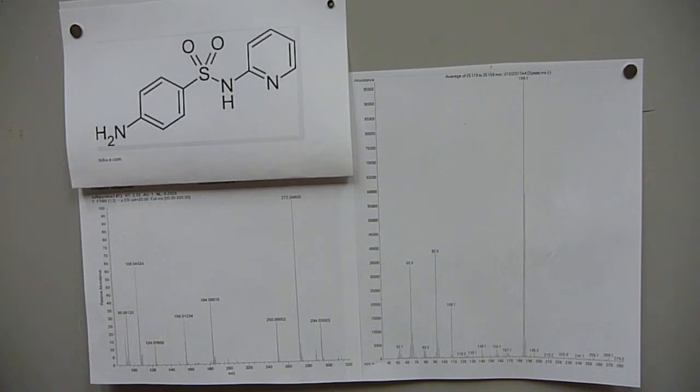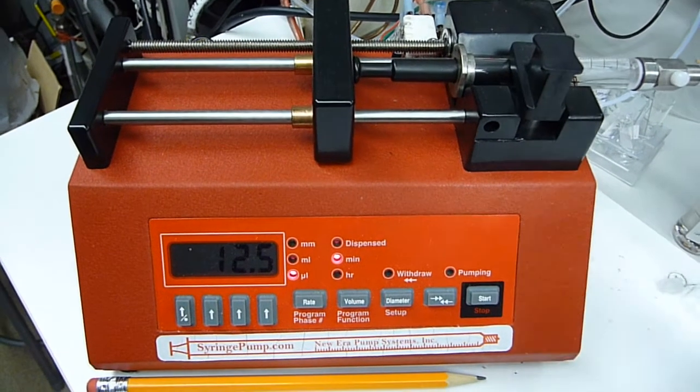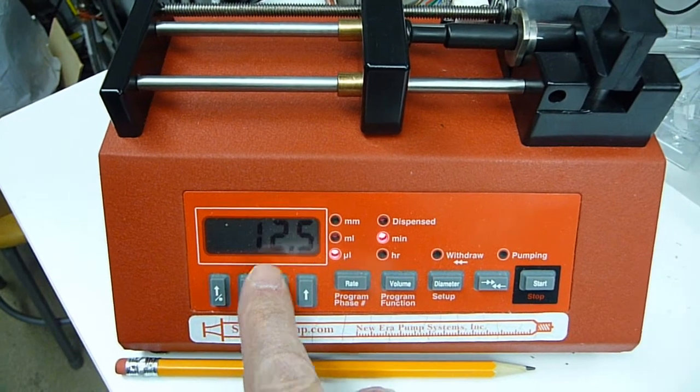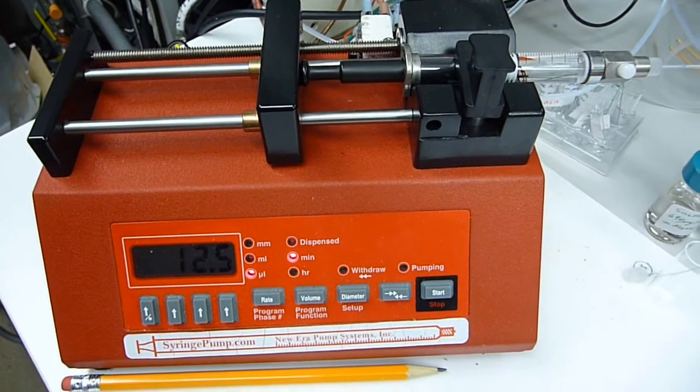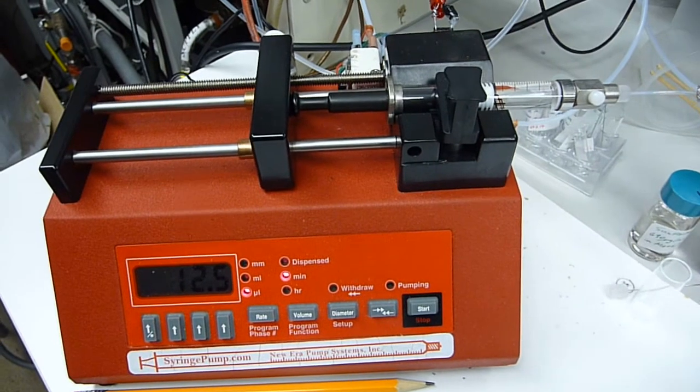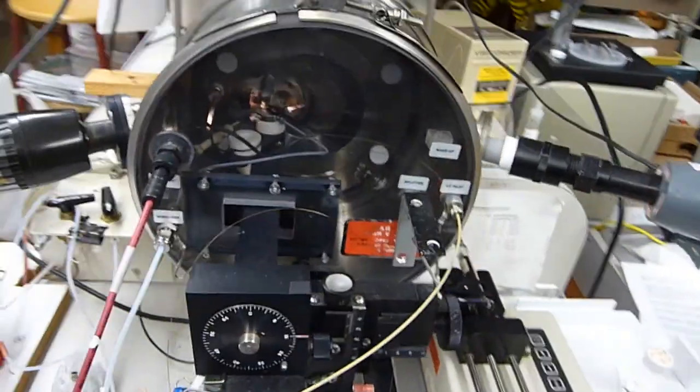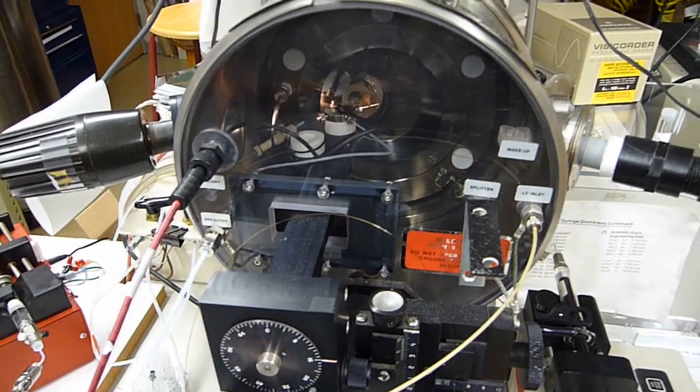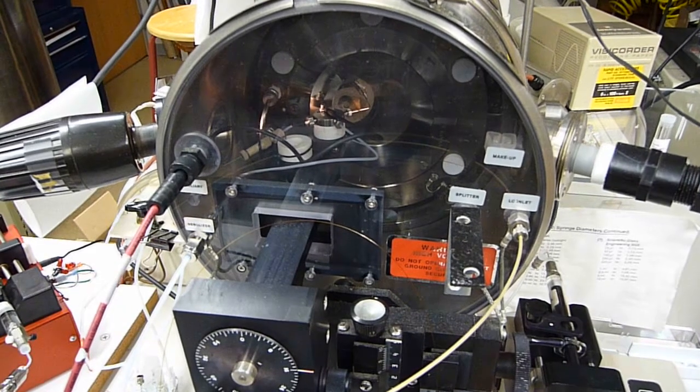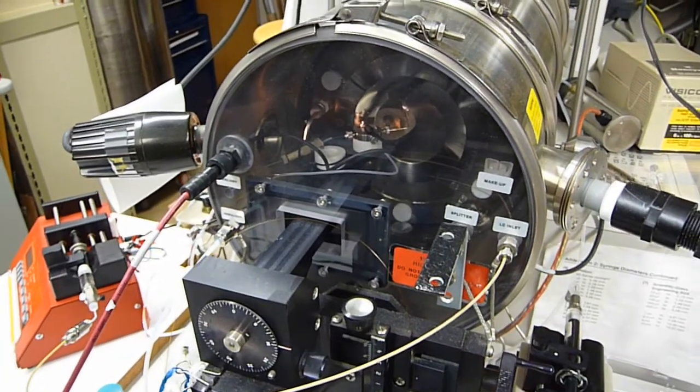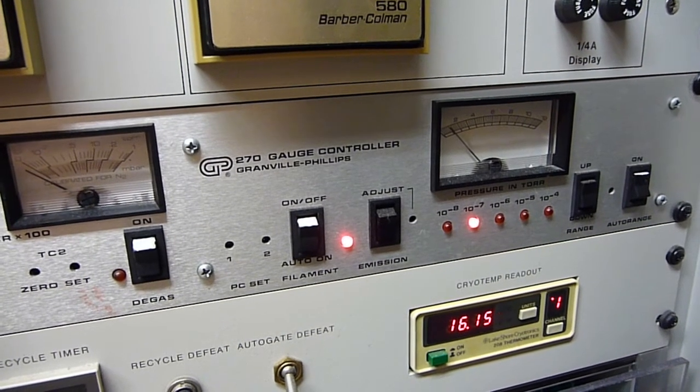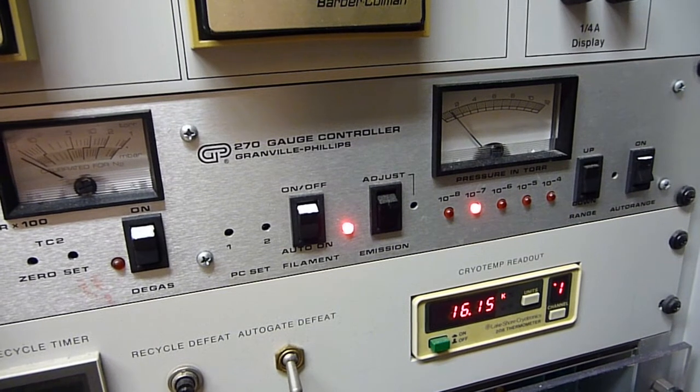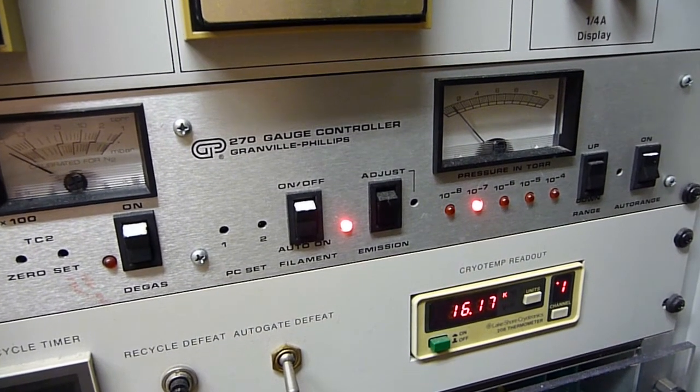So let's do a real-time MS-MS precursor ion scan. This is our solution here, and we're going to infuse 12.5 microliters per minute, 35 nanograms per microliter originally. It's going to go into a SCIEX API 3 plus source. It's a pneumatic-assisted electrospray.